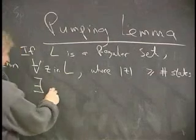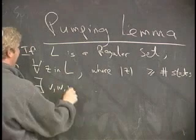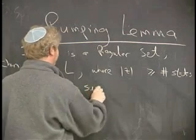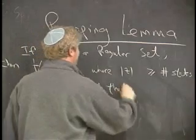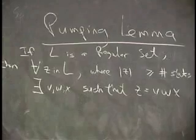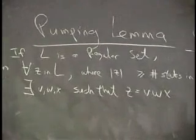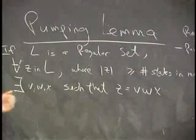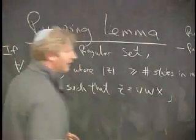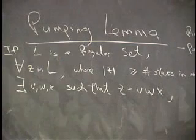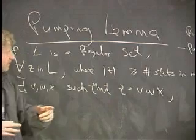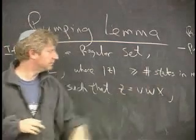There exists V, W, X, three parts, such that Z equals V, W, X. The string we were given at the beginning is equal to the concatenation of these three, put one against the other. And there's some conditions on V, W, X that help us and give us some power here. The loop has to come within the first, let's give this a name.